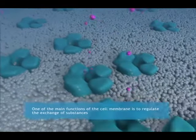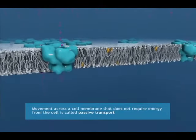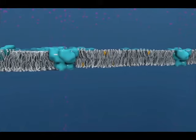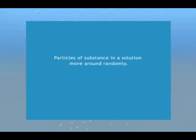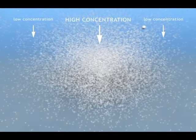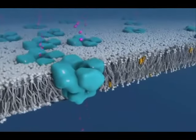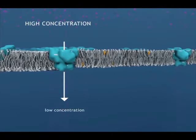One of the main functions of the cell membrane is to regulate the exchange of substances. Movement across the cell membrane that does not require energy from the cell is called passive transport. To understand how molecules diffuse across the membrane, it is important to understand what is meant by diffusion. Take the example of a sugar cube dropped in water. Particles of a substance in a solution move around randomly. If there is a concentration gradient in the solution, the substance will move from an area of higher concentration to an area of lower concentration, down the concentration gradient. This is called diffusion. Eventually, the concentration of substance in solution will reach equilibrium, where the concentration of a substance is equal throughout the space. It is diffusion that propels many substances to passively enter or leave cells.